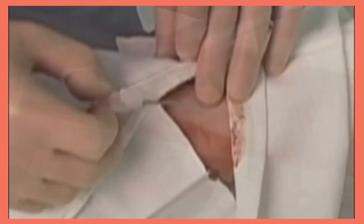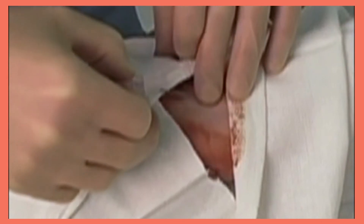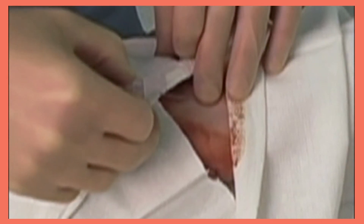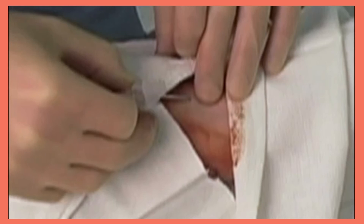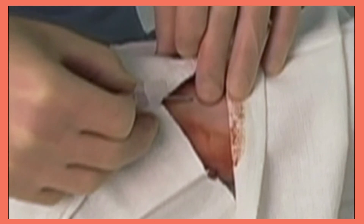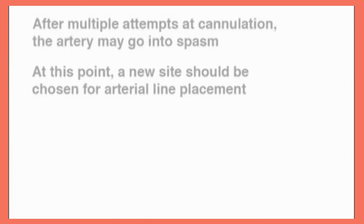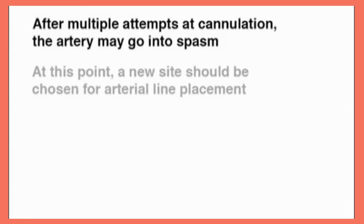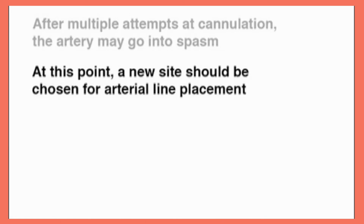In some instances, the catheter may get hung up on the skin, making it hard to advance. The risk of this can be minimized at the start of the procedure by making a skin nick using either an 11 blade scalpel or a larger bore needle. Finally, after multiple attempts at cannulation, the artery may go into spasm, which will make it nearly impossible to cannulate. In this setting, attempts at the artery should cease and a new site should be selected.